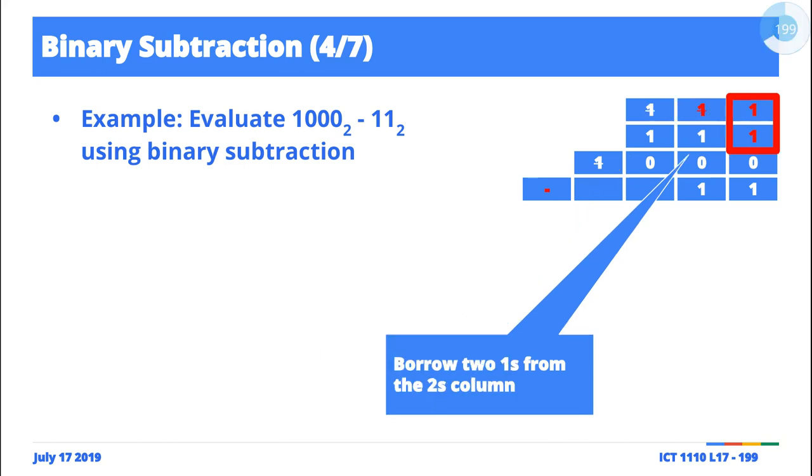We borrow one of the two ones that we have in the two's place so that we use it in the ones place. Finally, in the ones place we have two ones. So two ones minus one one is going to be one.